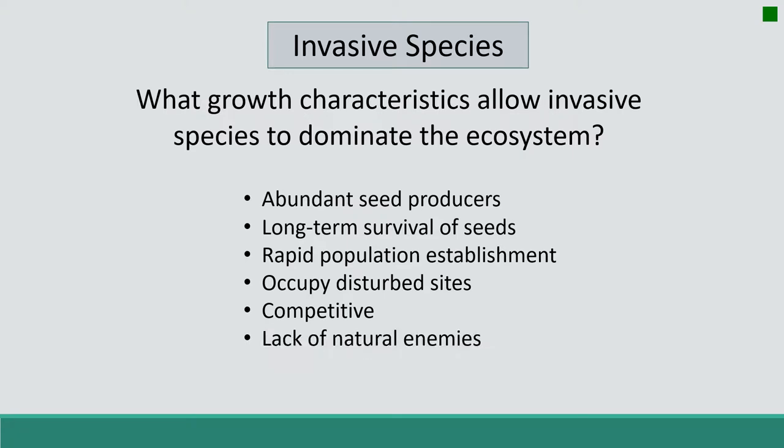Invasive species also lack natural enemies. These can include things like insects, microbes, or even animals that control populations in their native environments.